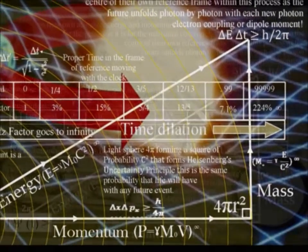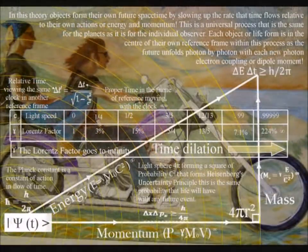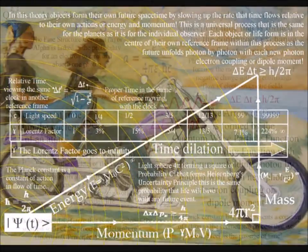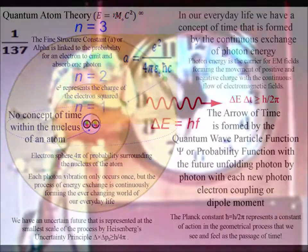In this theory these two totally different forms of mass are connected, within one universal process, by the continuous exchange of photon energy.